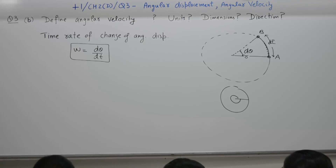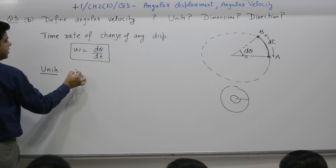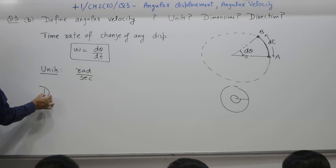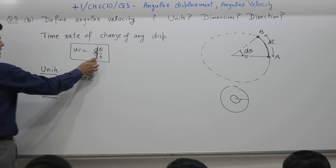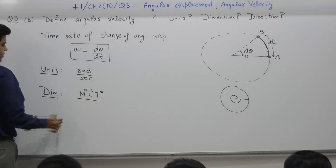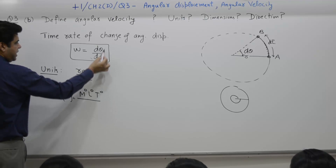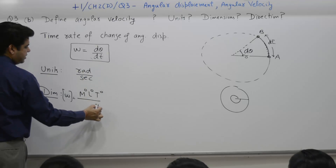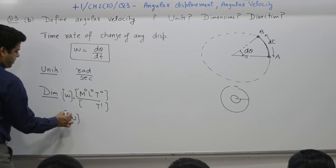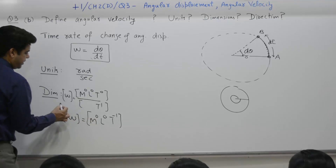The direction of omega will be discussed separately. For units, the SI unit of omega is radian per second. For dimensions, since angle is dimensionless (M0, L0, T0) and time has dimension T1, the dimensional formula for omega is M0, L0, T minus 1.